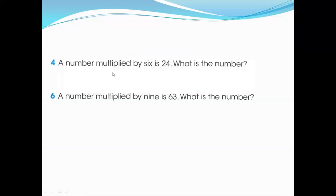Let's start. A number multiplied by six is 24 — what is the number? If you know the table of six, it's very easy. Six multiplied by one equals six, six multiplied by two equals twelve, and so on.